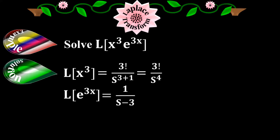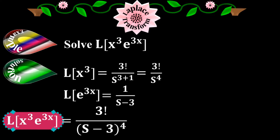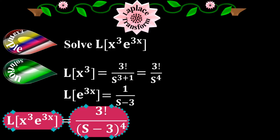The next step is very important. Take s minus 3 from the denominator, which is the output of the second elementary function, and substitute it for s in the denominator of the first elementary function. Put s minus 3 for s — don't take s to the 4 and put it in s. Always take the denominator of the second elementary function. When I put s minus 3 for s, I get 3 factorial over s minus 3 to the 4. That's how Laplace of x to the 3 times e to the 3x equals 3 factorial over (s minus 3) to the 4.